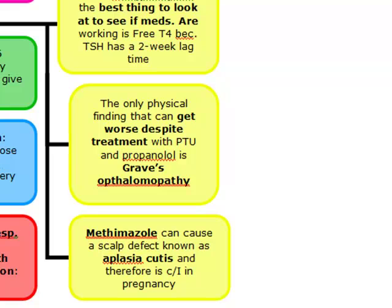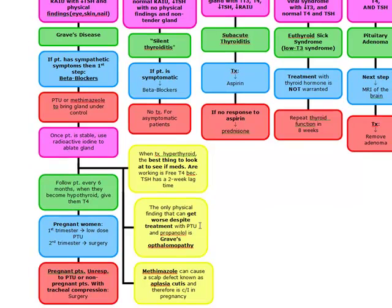For pregnant women: first trimester low-dose PTU, second trimester surgery, and also patients that have tracheal compression or pregnant patients unresponsive to PTU also get surgery. One important thing to remember is that PTU and propranolol cannot help the Graves' ophthalmopathy. The proptosis and exophthalmus can actually get worse despite treatment — all the other findings can get better.